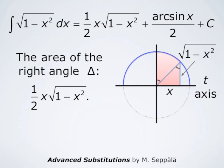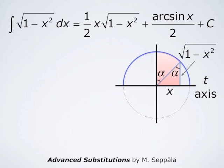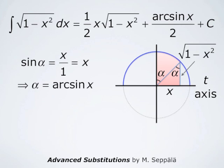Next we compute the area of the sector indicated in this picture. To that end we compute the angle of the sector. That angle is the same as the acute angle alpha indicated in the right angle triangle, so the two angles alpha in this picture are the same. The right angle triangle has hypotenuse of length 1, because the blue curve is an arc on the circle of radius 1. Looking at this right angle triangle, sine of alpha equals x divided by 1, so sine of alpha equals x, which means alpha equals arcsin of x.